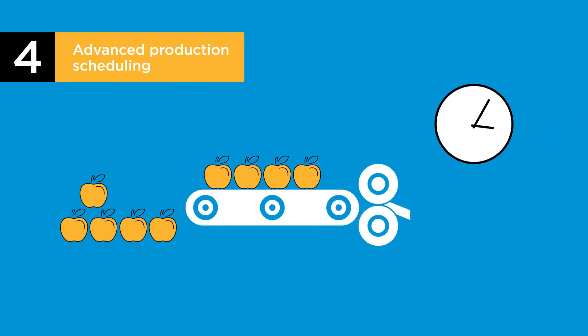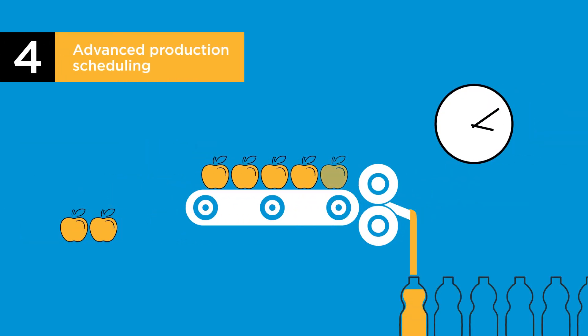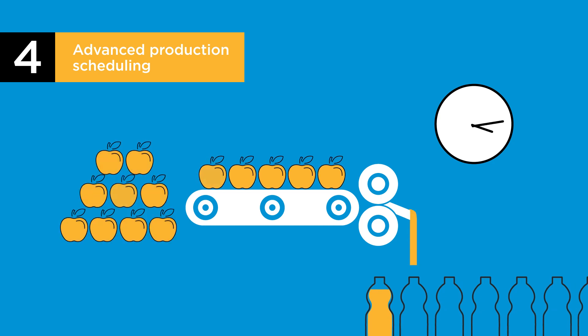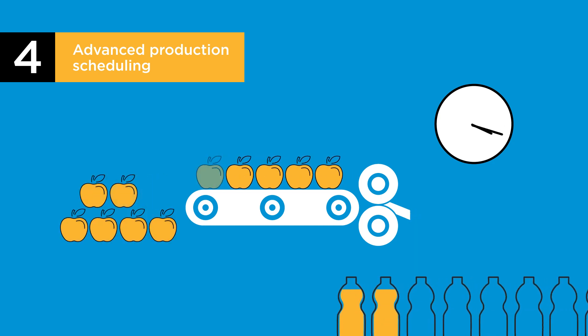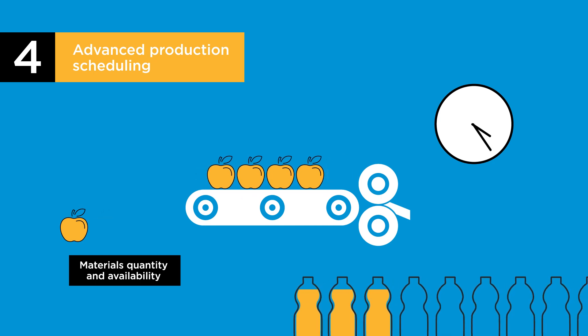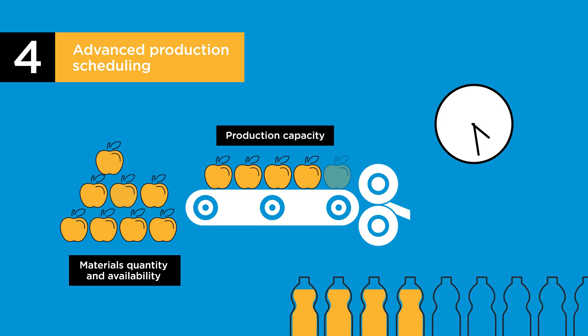An ERP system should optimize production processes, reduce downtime, and enhance productivity by creating and managing production schedules based on materials quantity and availability, production capability, and lead times.